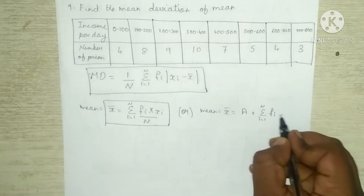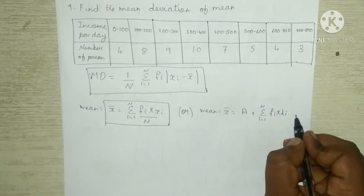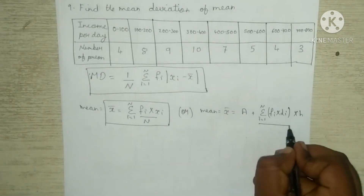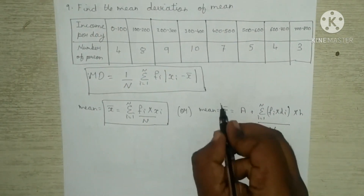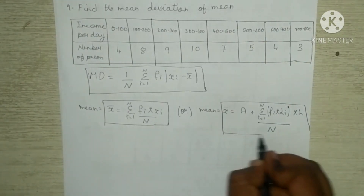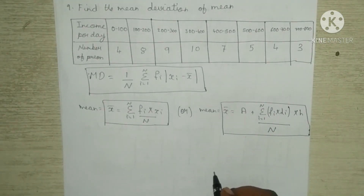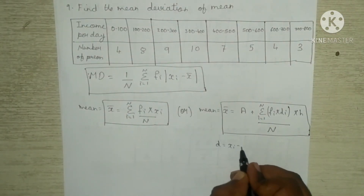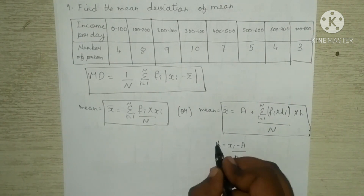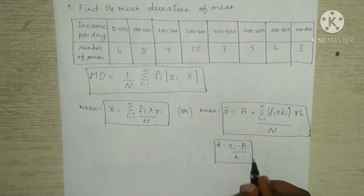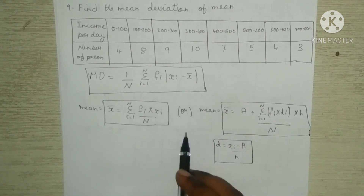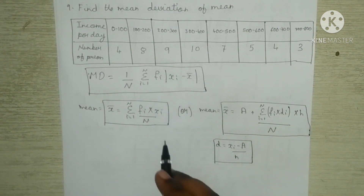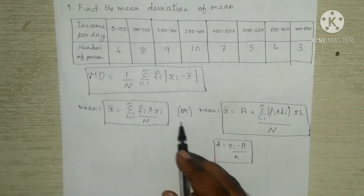The mean formula for the ninth question can also be written as: x-bar = a + (summation of f_i × D_i / N) × H, where D = (x_i minus a) / H. With the help of either mean formula, you can find the mean and then simplify the ninth question.